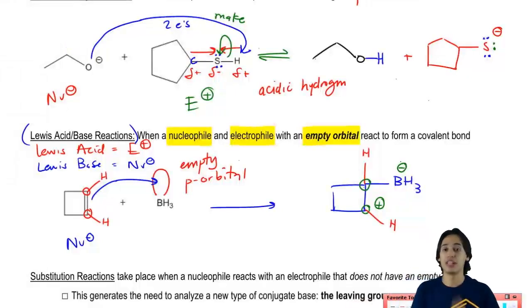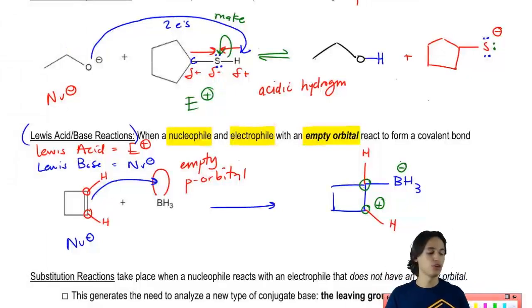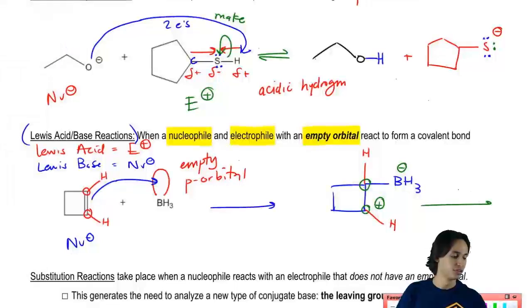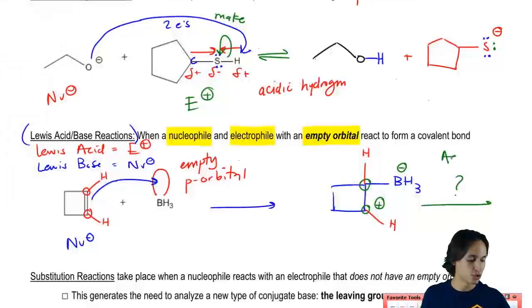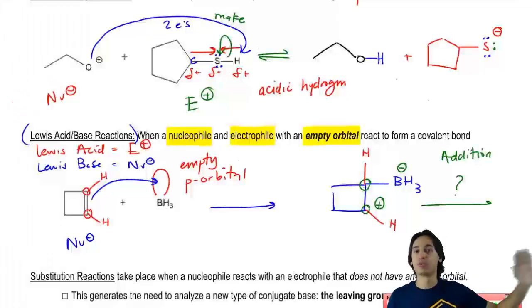Now we're going to leave this right here. Later on in future chapters, we're actually going to continue. I'm just going to put a question mark because we don't know what that is yet. But in the addition chapter, once we get there, what we're going to find is that this is the precursor to a very important reaction. But we're not there yet.